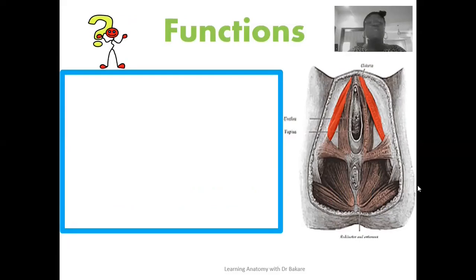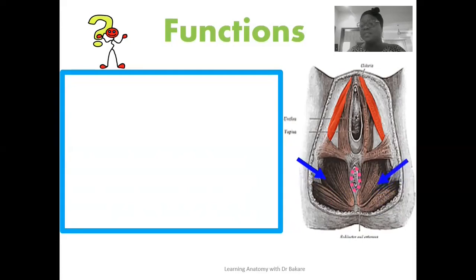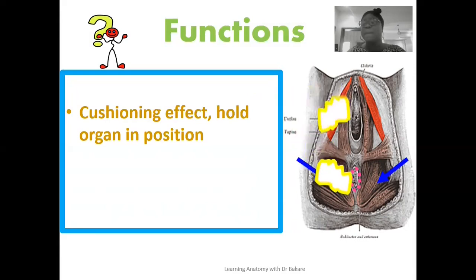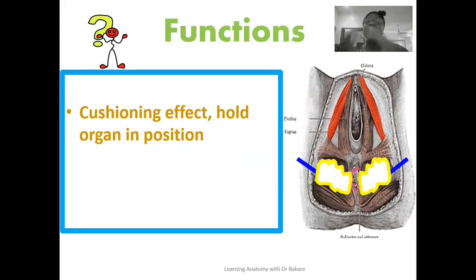The ischioanal fossa is located at the posteriorly placed anal triangle, with the opening of the anal canal at the central part, and the ischioanal fossae on both sides. It is not an open space — it is filled with fatty tissue, and this fatty tissue allows for a cushioning effect which helps to hold the organs around this region in place. These structures are held in place by the fatty tissue embedded within the ischioanal fossa.